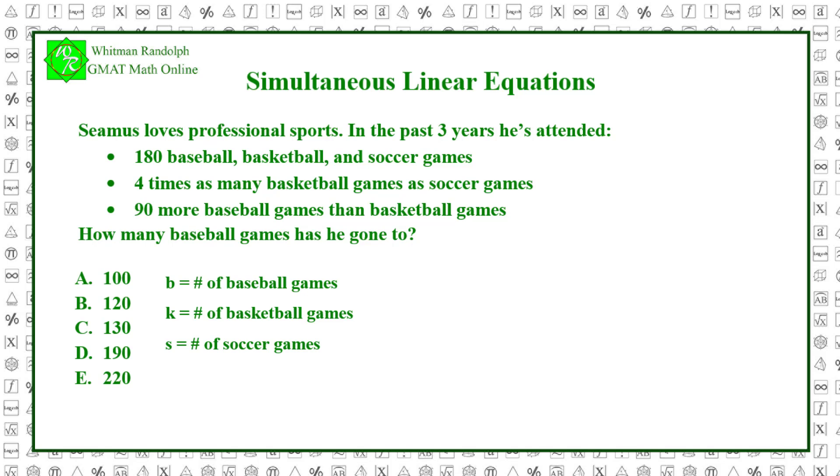Let b equal the number of baseball games, k equal the number of basketball games, and s equal the number of soccer games Seamus has gone to in the past three years. We have three unknowns, so we need three equations. Then we have the following relationships. b plus k plus s equals 180. k equals 4s. b equals k plus 90. Thus b equals 4s plus 90.